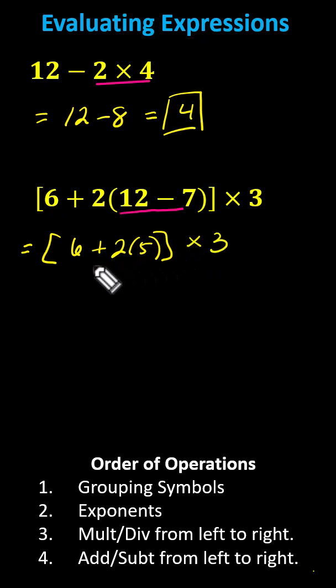Still working inside the grouping symbols or brackets now, we have addition and multiplication. Again, we know we multiply and divide before we add and subtract. The next step is 2 times 5, which is 10, giving us in the brackets the quantity 6 plus 10, all times 3.